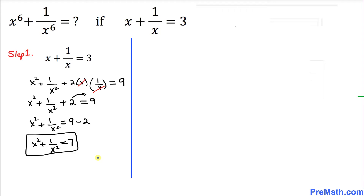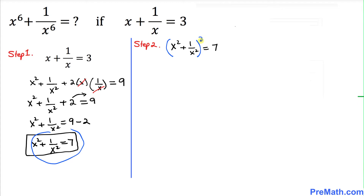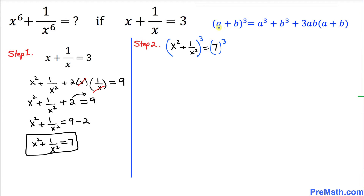Since we are running out of space on the left hand side, let's move on to the right hand side with our next step. In step 2, I have copied down this part right over here. This time we are going to take the cube on both sides, power 3. We are going to use this formula: a plus b power 3 equals a cube plus b cube plus 3ab times a plus b. In our case, x square is going to be our a and 1 over x square is going to be our b.